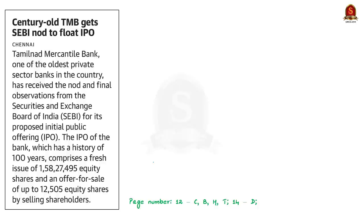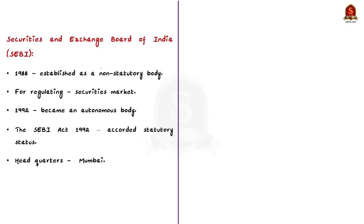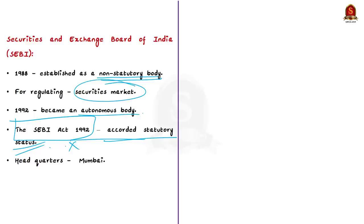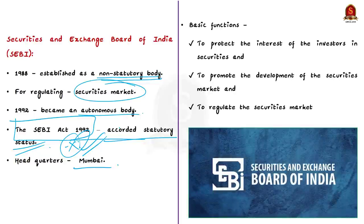The next article: Tamil Nadu Mercantile Bank, one of the oldest private sector banks in the country, has received the nod and final observation from SEBI for its proposed IPO. Let's use this opportunity to learn about SEBI. SEBI was first established in 1988 as a non-statutory body for regulating the securities market, and later became an autonomous body in 1992, accorded statutory powers with the passing of the SEBI Act 1992 by the Indian Parliament. Its headquarters is in Mumbai, and its basic functions include protecting the interests of investors in securities, promoting development of the securities market, and regulating the securities market.